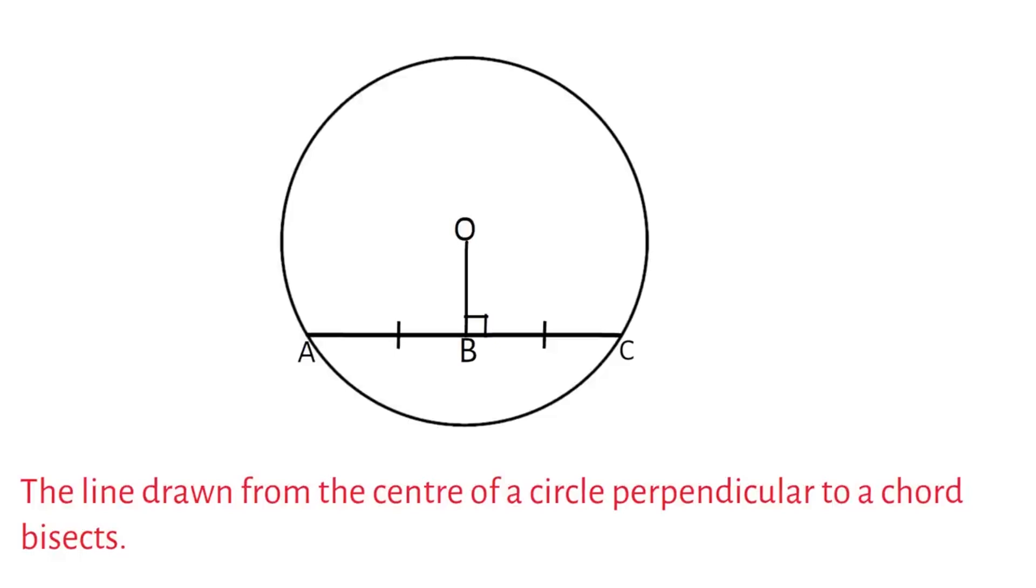So now our chord AC has been bisected into two equal parts, where line AB is equal to line BC.